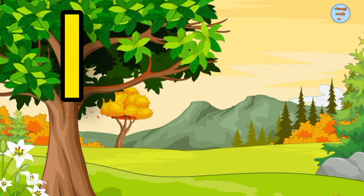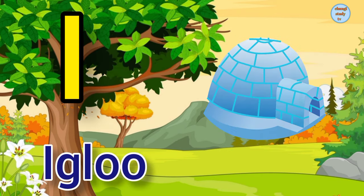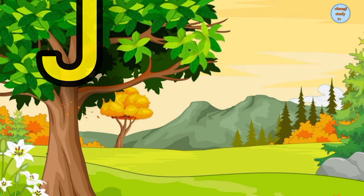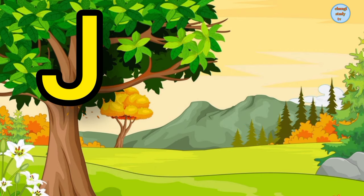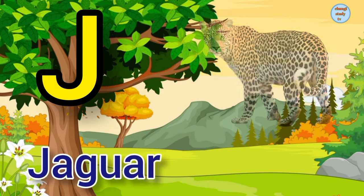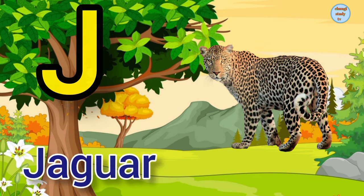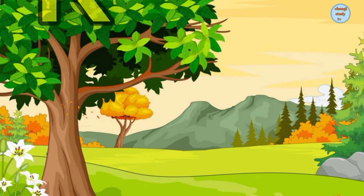I. I for igloo, igloo means igloo. J. J for jaguar, jaguar means tendua.